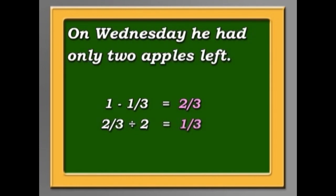On Wednesday, he looked in the bag to find he had only two apples left. So now we know that one-third equals two apples. So how many apples were originally in the bag? One-third was two apples, so how many are three-thirds? Work it out for yourselves.